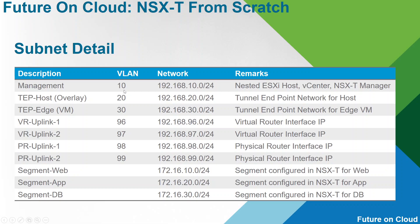These are the subnets I am going to use in this lab. VLAN 10 will be used for management traffic for ESXi hosts, vCenter, and NSX-D Manager. VLAN 20 is dedicated for TEP host overlay traffic. VLAN 30 is dedicated for HVM traffic. VLANs 96 and 97 are dedicated to communicate with virtual router Uplink 1 and Uplink 2. VLANs 98 and 99 will be used to communicate with physical router Uplink 1 and Uplink 2. The remaining 3 subnets will be used for web, app, and DB in the NSX-D environment.